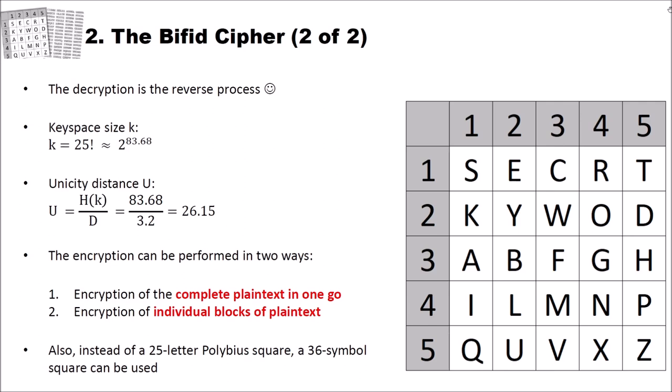Now let's have a look at the key space size of the bifid cipher. The key space size k is 25 factorial, which is about 2 to the power of 83.68 keys. Why is it 25 factorial? Let's have a look at the Polybius square again. In our Polybius square, we have 25 different positions where we have to put in 25 different Latin letters. So we start with the first position. We have 25 letters to choose from, then 24, then 23, then 22, and so on. And for the last position we only have one. You have to multiply all these numbers, and this is factorial of 25.